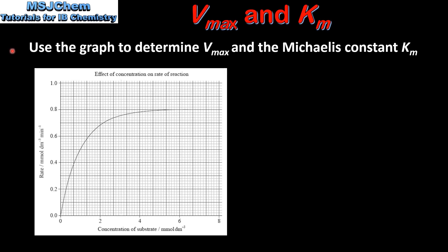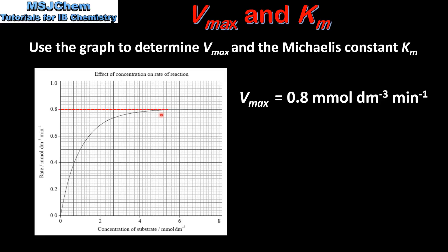Next we'll use this graph to determine the Vmax and the Michaelis constant Km. For Vmax, we draw a horizontal line from the point of saturation to the y-axis, and this tells us the value of Vmax, which is 0.8 millimoles per decimeter per minute.